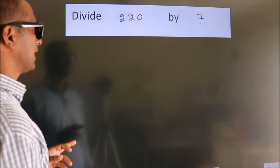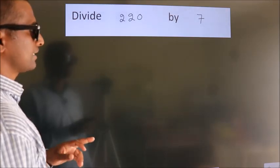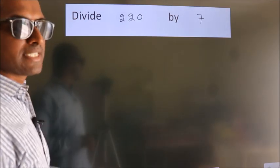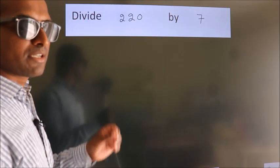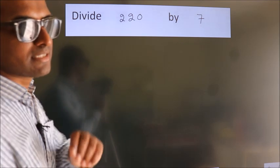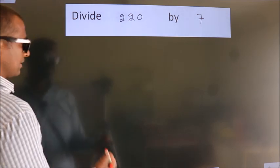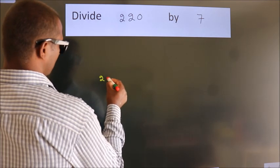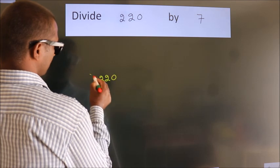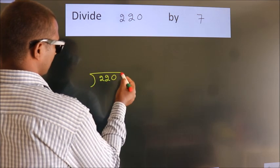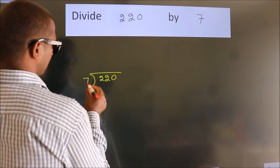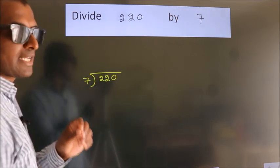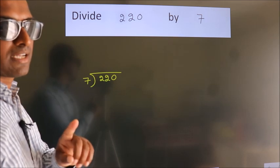Divide 220 by 7. To do this division, we should frame it in this way: 220 here, 7 here. This is your step 1.